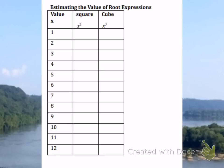So 1 squared — the meaning of that is simply 1 times 1, and so that is 1. And 1 cubed would be 1 times 1 times 1, and that is also 1. 2 squared is 2 times 2, and so 2 squared is equal to 4, whereas 2 cubed is 2 times 2 times 2, and that gives you 8.